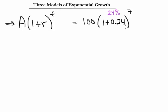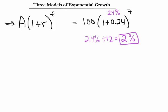Instead of waiting until the end of every year to get that 24%, what if I split it up — once a month instead of once a year? If I get 24% over the whole year but receive it every month, that's 24% divided by 12 months, meaning every month I get 2%. Then in seven years, there are 7 × 12 = 84 months — that's how many times I'd compound the interest.